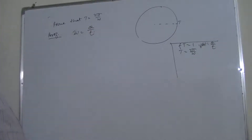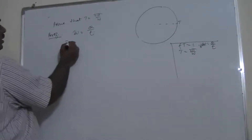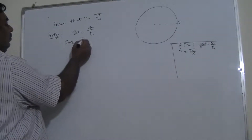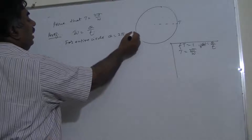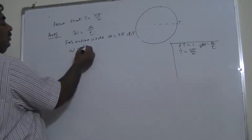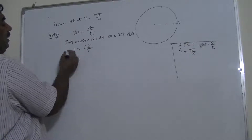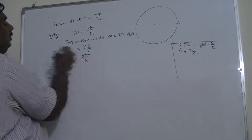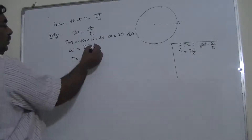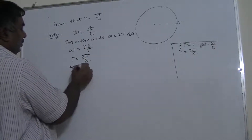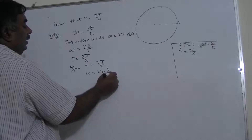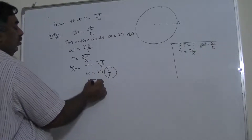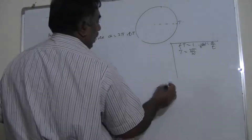For an entire circle, theta equals 2π and t becomes the time period capital T. So omega equals 2π upon T, which gives T equals 2π upon omega. From this relationship, we can also write omega equals 2π upon T, which equals 2π times (1/T). Since 1/T equals frequency f, we get omega equals 2πf.